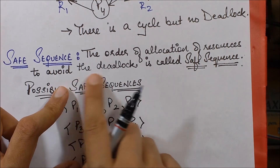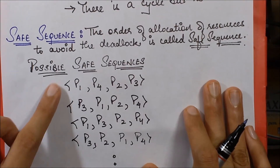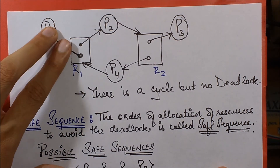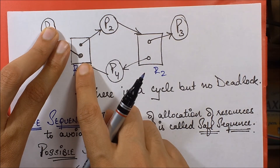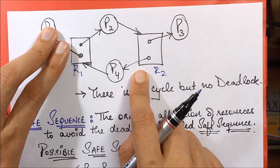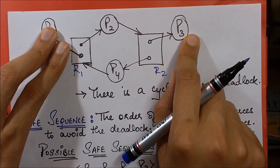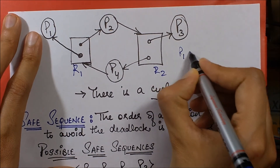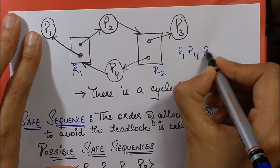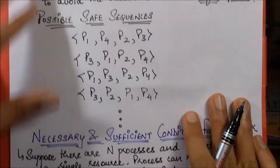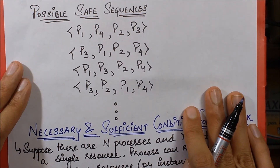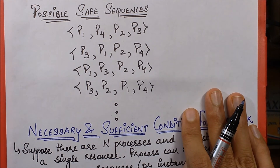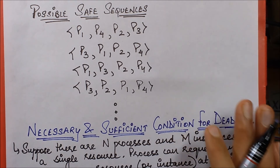A safe sequence is the order of allocation of resources to avoid deadlock. One possible safe sequence in this scenario: P1 completes first, then P4 can be assigned the resource instance, P4 completes, P3 completes independently, and finally P2 completes — giving the sequence P1, P4, P3, P2. There are many more possible safe sequences corresponding to this scenario.